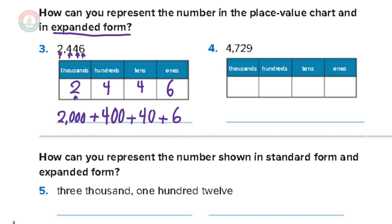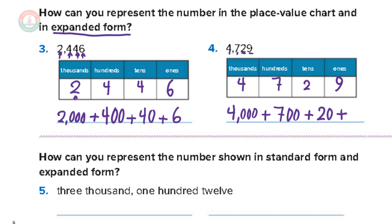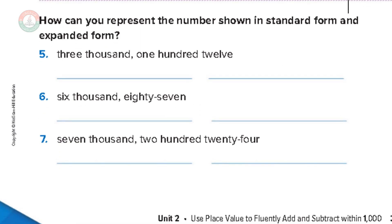Number four: four thousand seven hundred twenty-nine. Put four in the thousands, seven in the hundreds, two in the tens, and nine in the ones. For the expanded form, we split: four thousand (4000) plus seven hundreds (700) plus two tens (20) plus nine ones (9). So the expanded form is 4000 + 700 + 20 + 9.